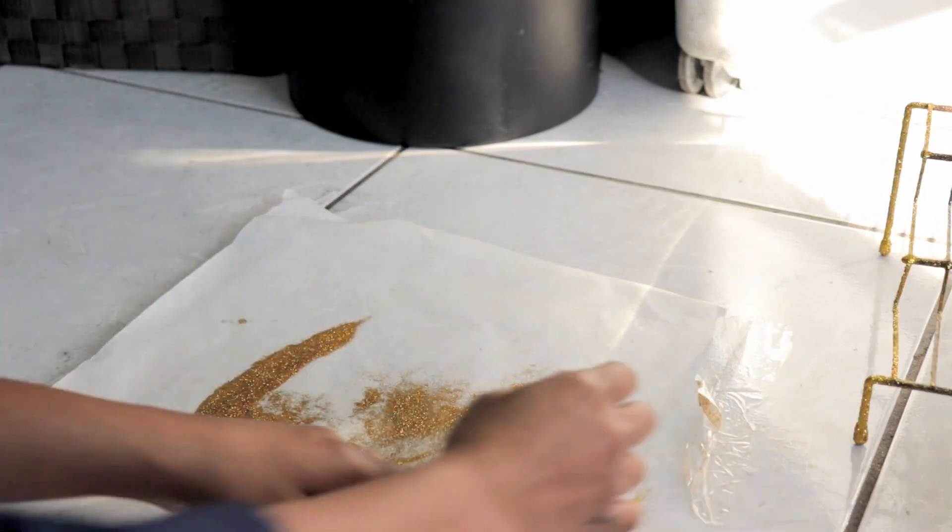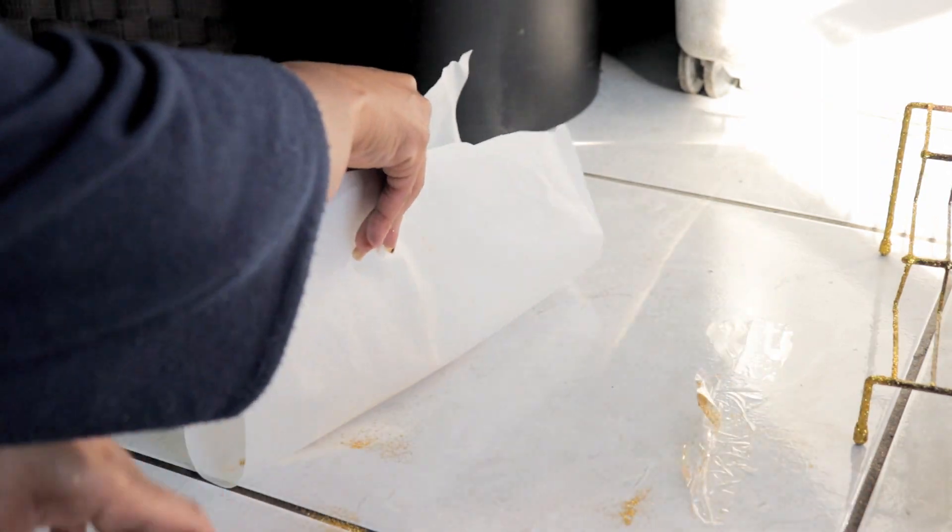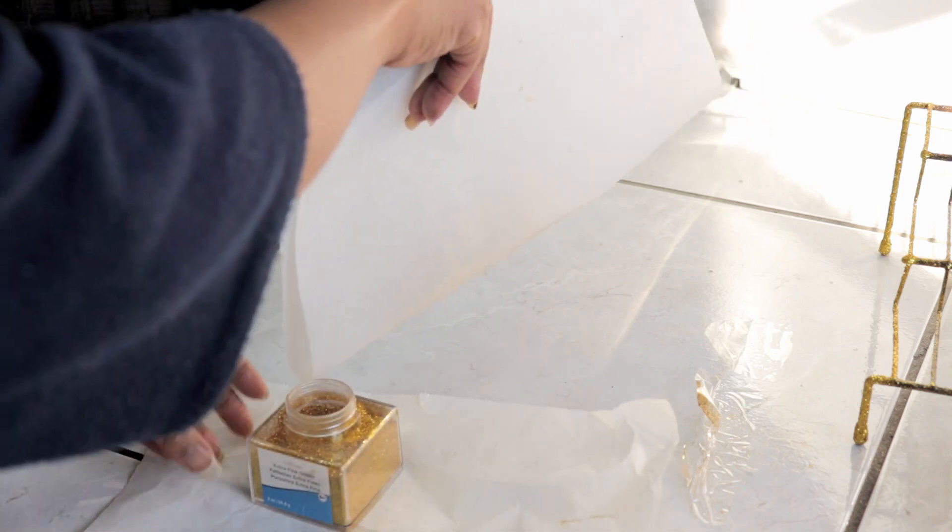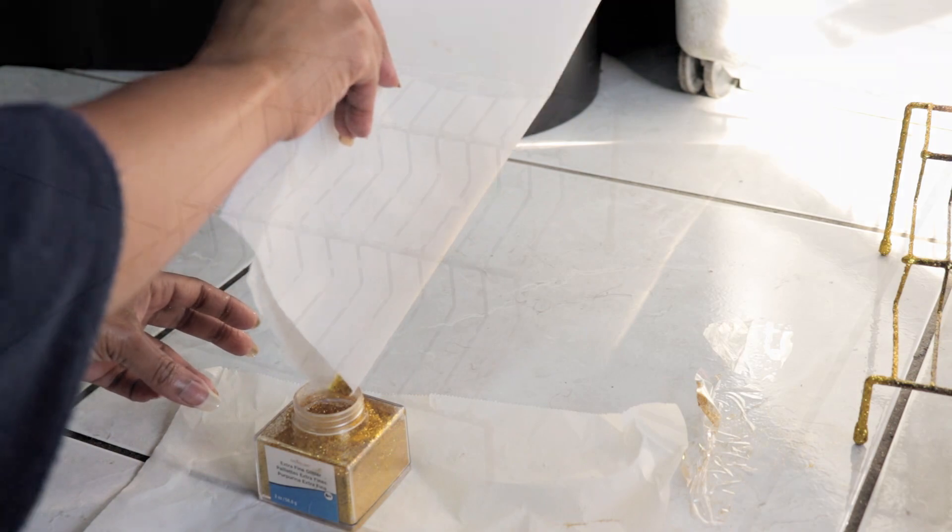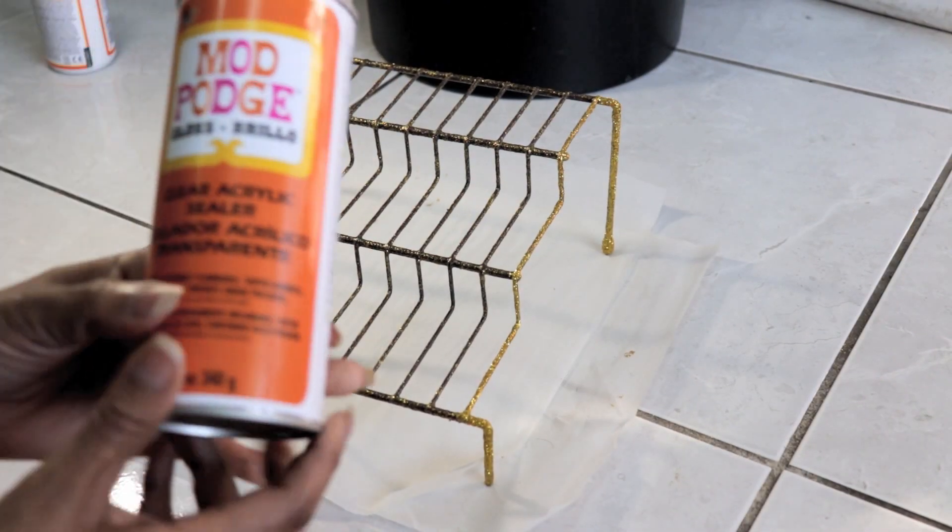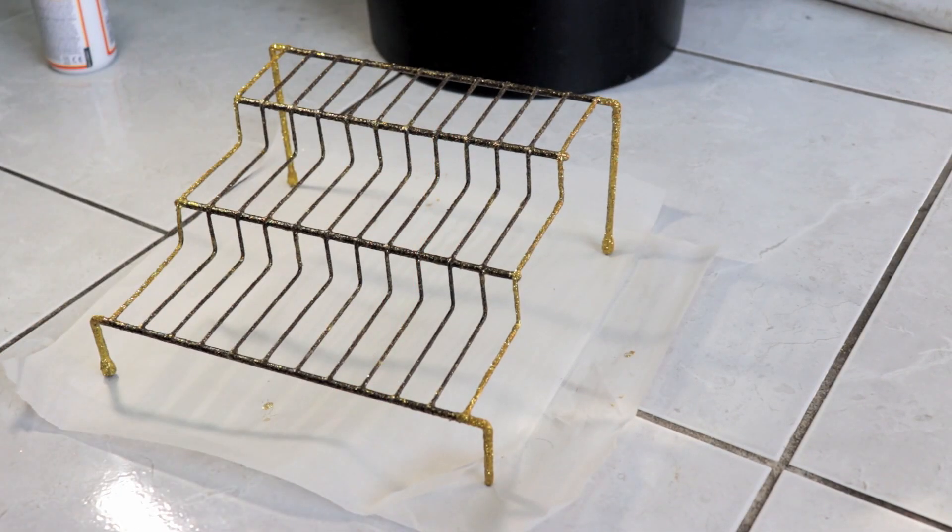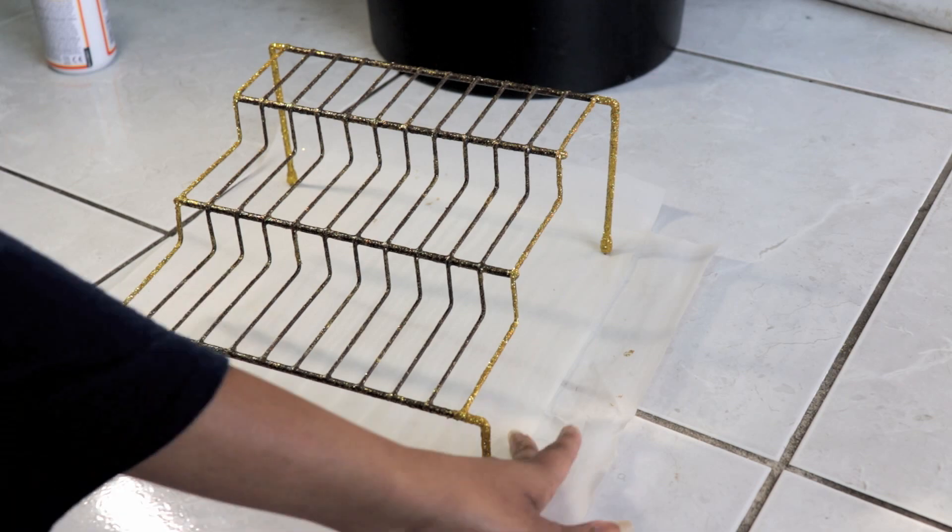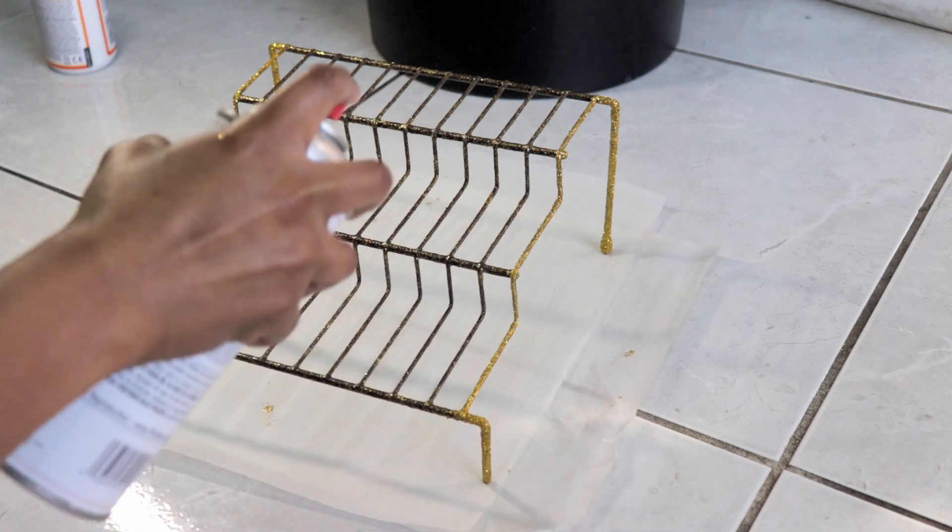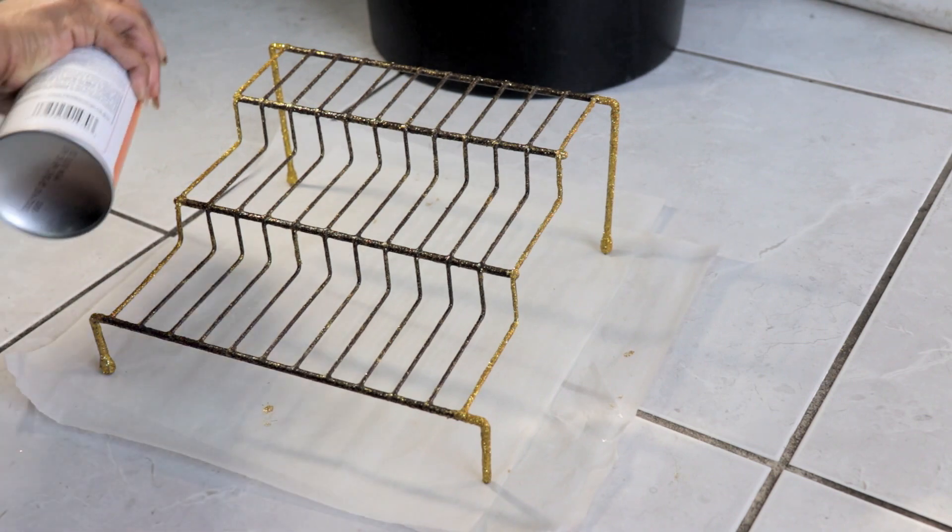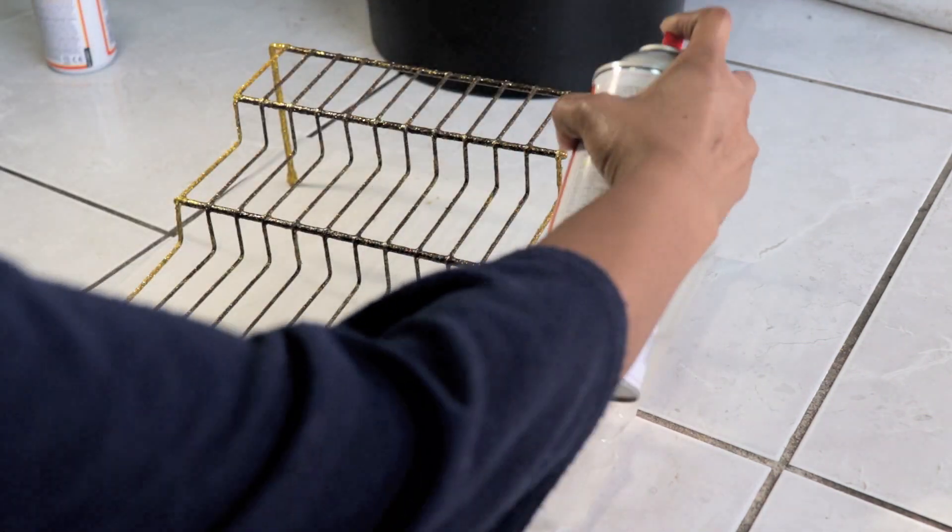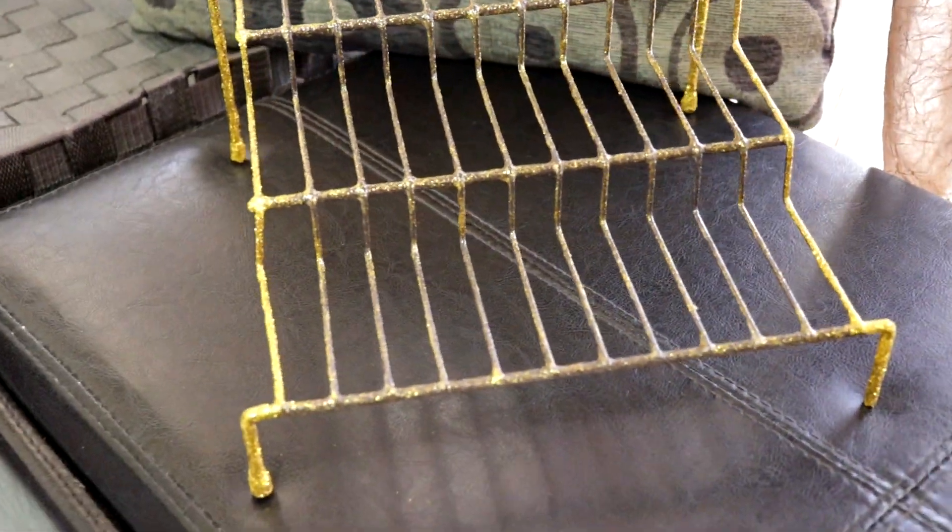Now I'm removing the parchment paper and putting the excess glitter back into the bottle. To make sure the glitter doesn't fall off and to seal it, grab your Mod Podge clear sealer and spray it over the shelf. This is how it came out.